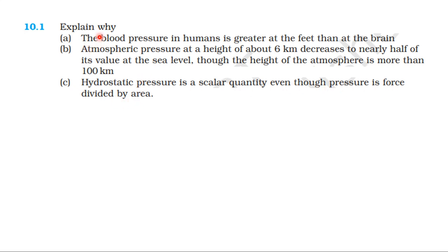So first, the blood pressure in humans is greater at the feet than at the brain. This is a general liquid column, one container with liquid. Now, the liquid at point P is at depth h between the surface and the point. The pressure at depth h is P = ρgh.